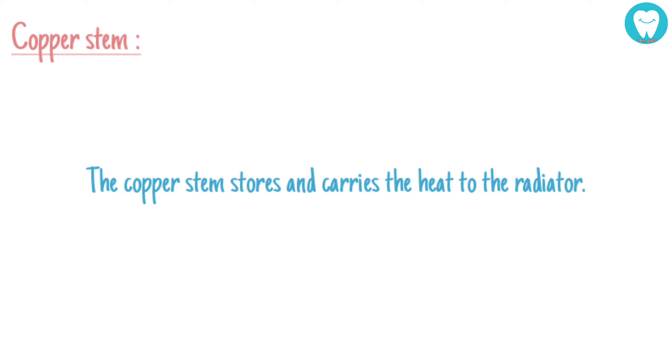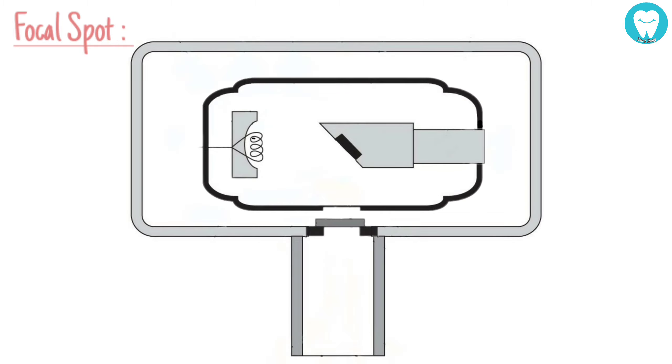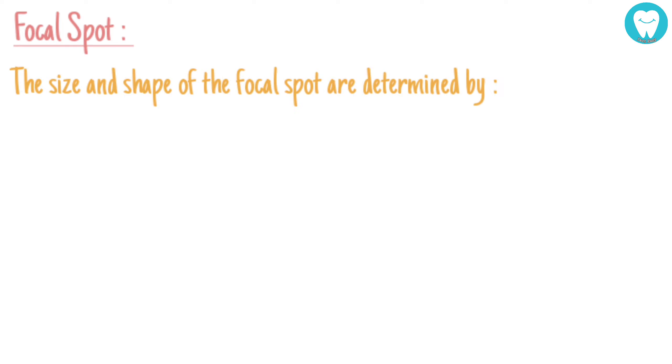Focal spot: The area of target at which the electrons are absorbed and X-rays are generated is called the focal spot or focal area. The size and shape of the focal spot are determined by the size and shape of the electron stream when it hits the anode.